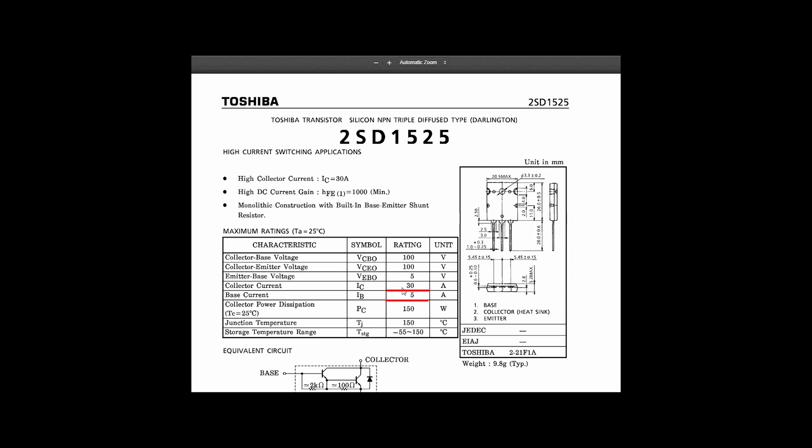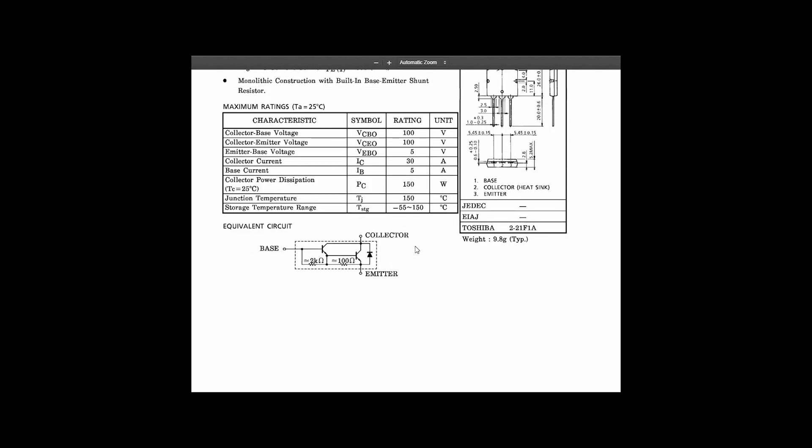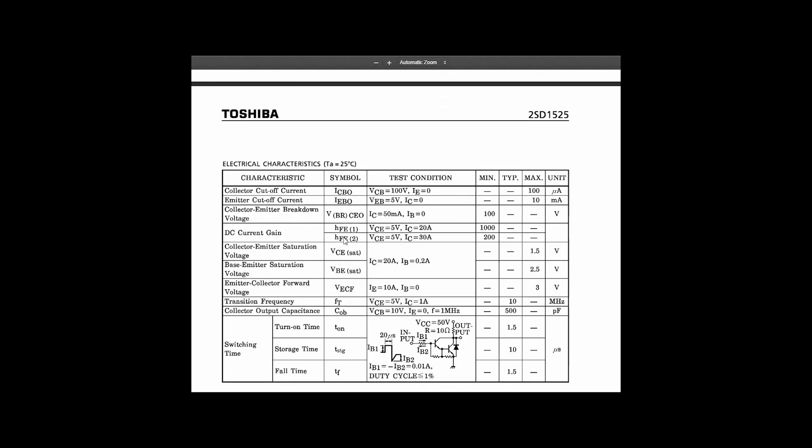In the data sheet, we can see 30 amps of the collector current, 5 amps of the current of the base. And 200 DC current gain as a minimum.